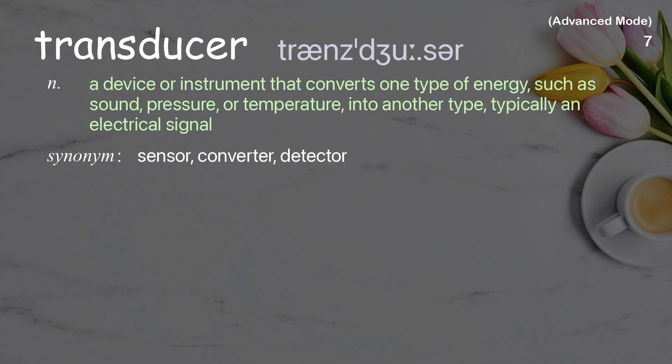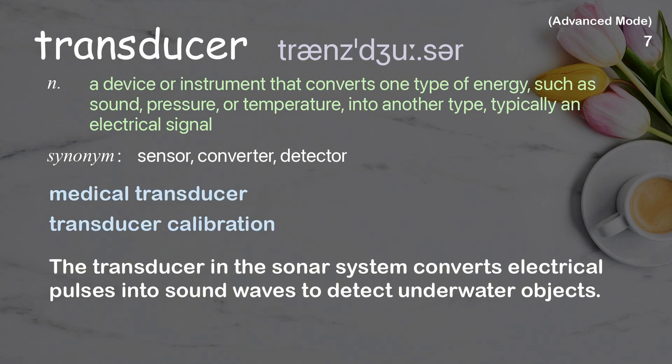Transducer: a device or instrument that converts one type of energy — such as sound, pressure, or temperature — into another type, typically an electrical signal. Examples: medical transducer, transducer calibration. The transducer in the sonar system converts electrical pulses into sound waves to detect underwater objects.